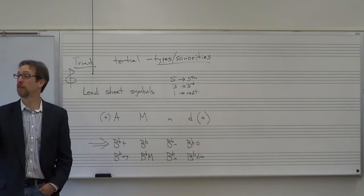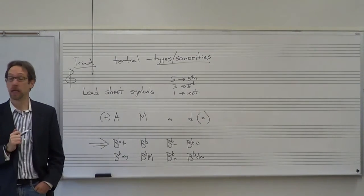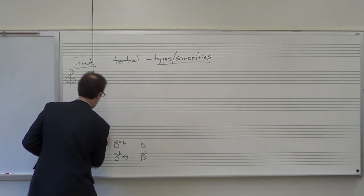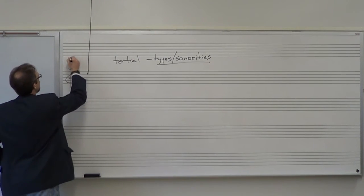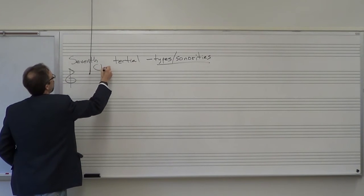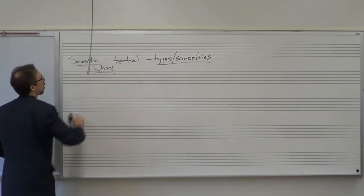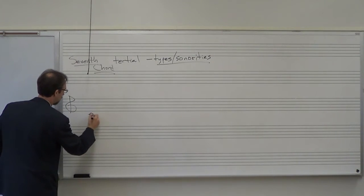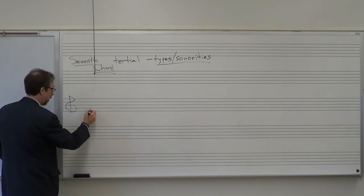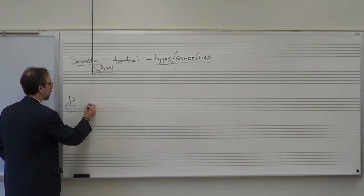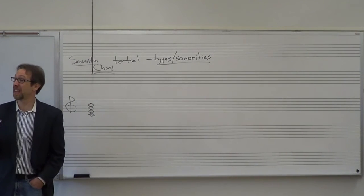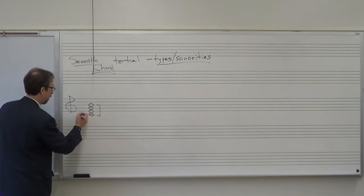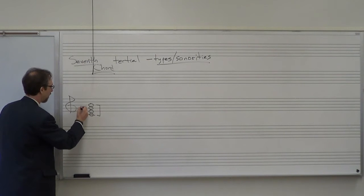We've now talked about triads, their types, how to figure them out, the formulas, and the lead sheet symbols. We are not done. Tertial harmony also includes larger chords. Beyond the triad, we have the seventh chord, which is also tertial harmony because it is built by stacking thirds. Let's take C and stack thirds: up a third is E, E up a third is G, G up a third is B. This is called a seventh chord — not because there are seven notes in it, but because the interval between the root and the top note is a seventh.